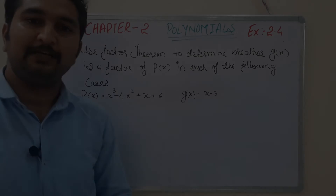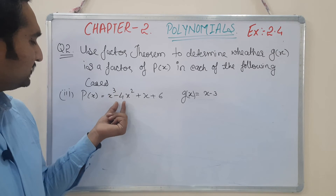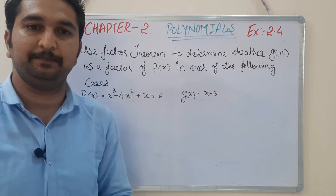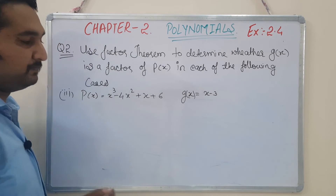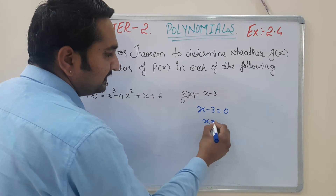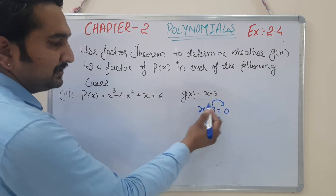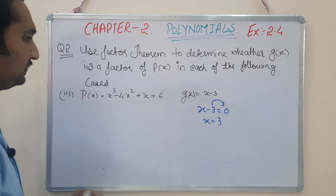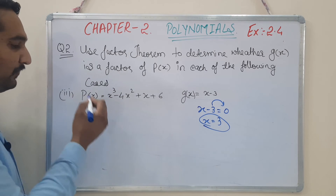Now the last sub-question: p(x) = x³ - 4x² + x + 6 and g(x) = x - 3. We find the value of x from g(x): x - 3 = 0, so x = 3. Transposing, minus converts to plus, giving x = +3. We will put this value x = 3 into p(x).